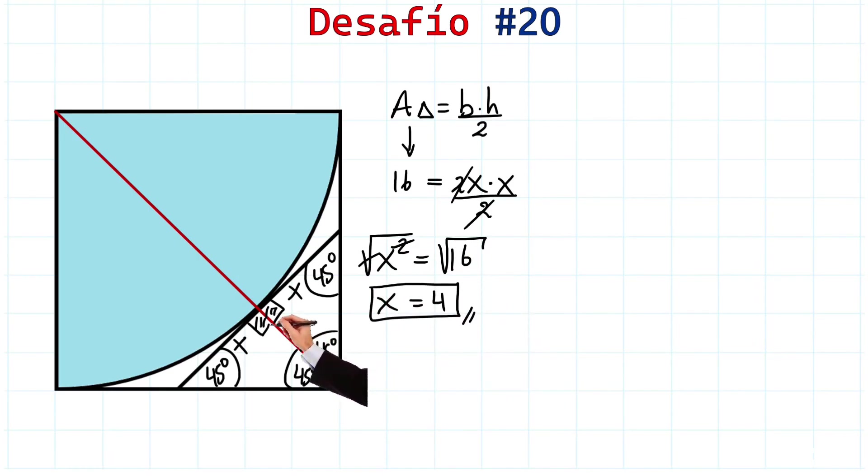Now, we're going to call lowercase r, the radius of the quarter circle that goes from here to here. Notice the radius matches the side of the square. So, this is R, and this here is also going to be R, all this line here. And from here to here will also be R. Very good.